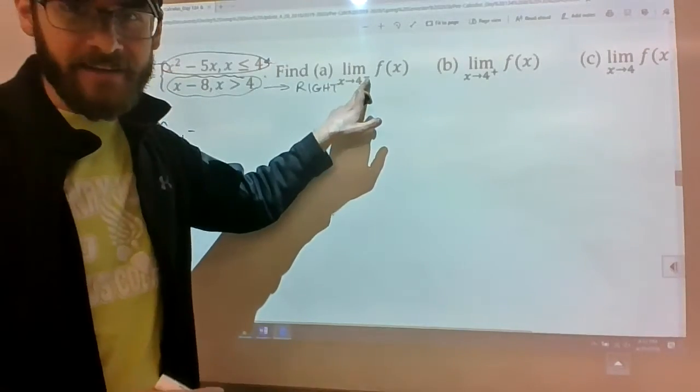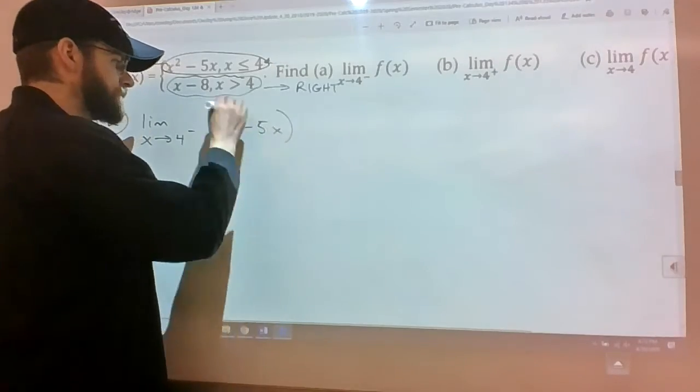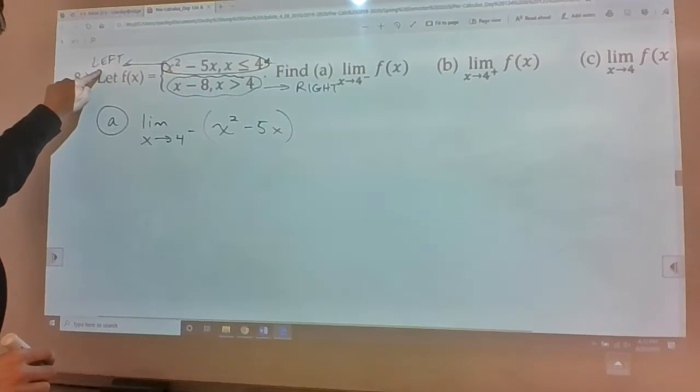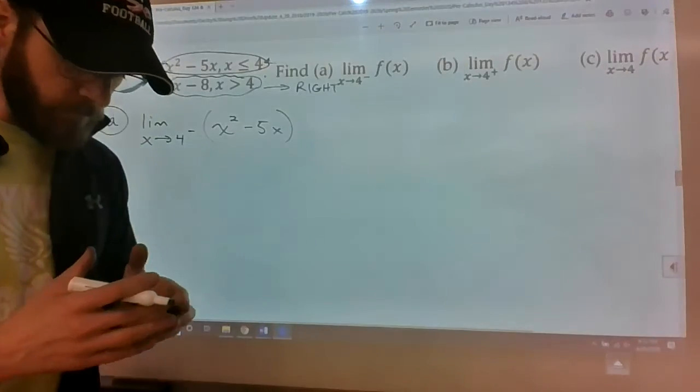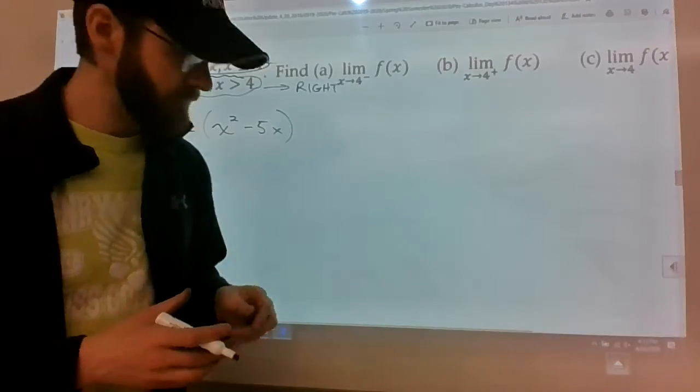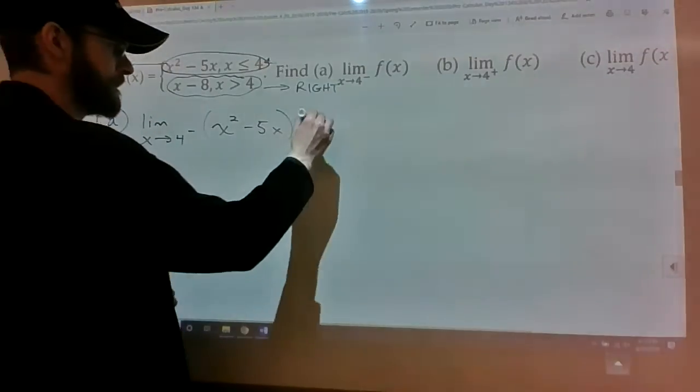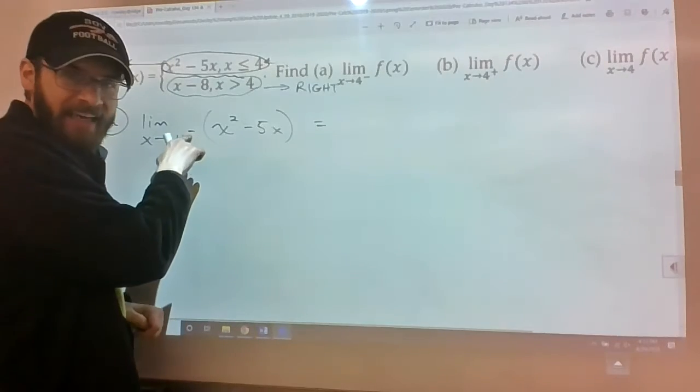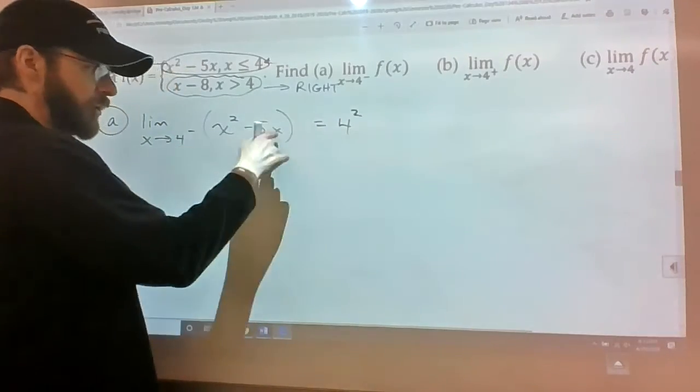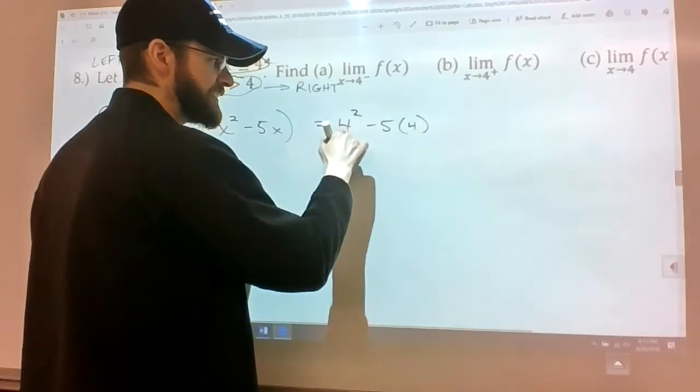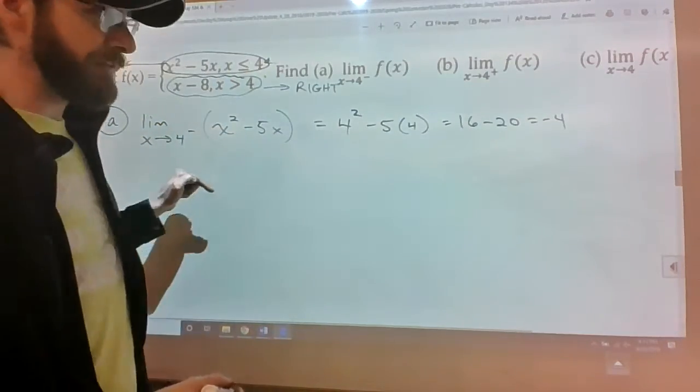So when you're computing part a, you are just using information from the top because the top represents the left behavior of the function. And then you ask yourself, where are my domain issues? Nowhere. That means I can plug four straight in. It doesn't matter if it's that little negative there. Four can go in for the x here. Four can go in for the x there. 16 minus 20 is negative four. The limit as x approaches four from the left is negative four.